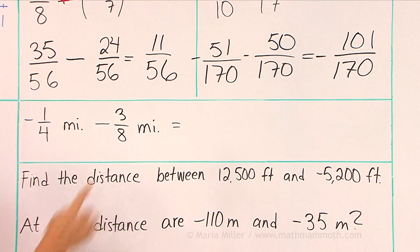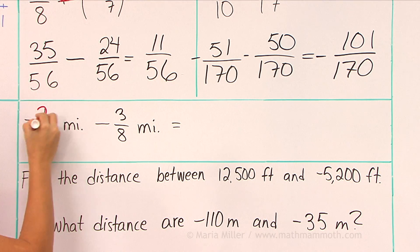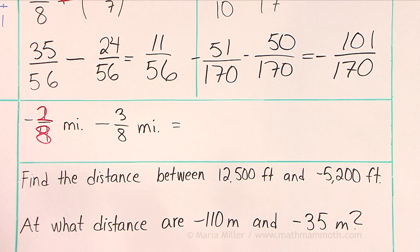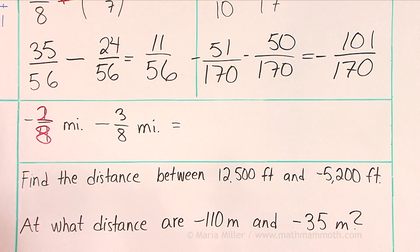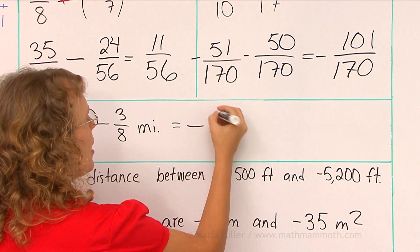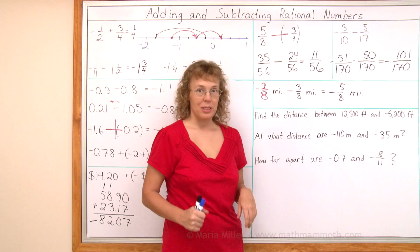Let's solve it too. We have eighths and fourths. We need a common denominator. But this is pretty easy. We just change this to two-eighths. There's negative two-eighths and then negative three-eighths. So we would get negative five-eighths of a mile as the final depth.